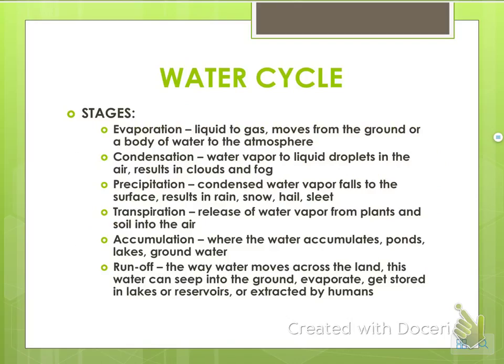Here are the stages of the water cycle. Evaporation: liquid goes to gas and moves from the ground to the atmosphere. Condensation: water vapor turns into liquid droplets — this is when you see clouds and fog. Precipitation: rain, snow, hail, sleet — when water falls back to the ground. Transpiration: trees or plants release water into the air. Accumulation: water collects in ponds, lakes, groundwater, and ditches after a rainstorm. Runoff: water moving down the land — down a mountain, through farm fields.